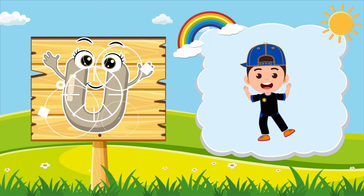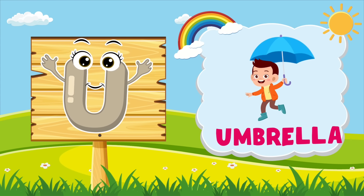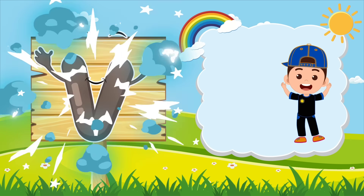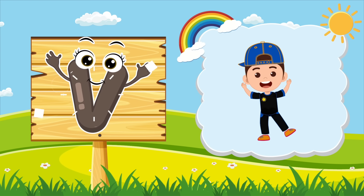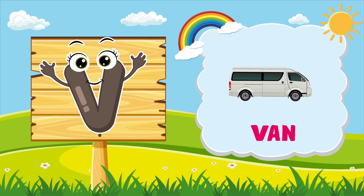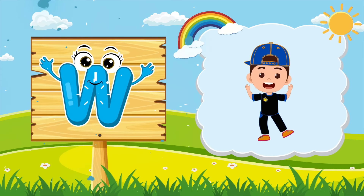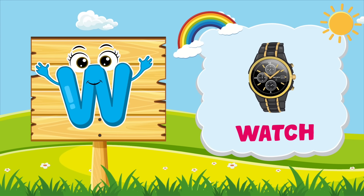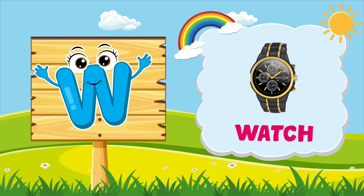U is for umbrella. U-u-umbrella. V is for van. V-v-van. W is for watch. W-w-watch.